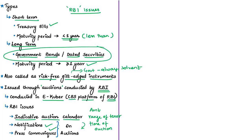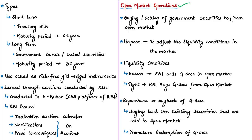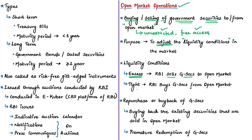Open market operations refer to the buying or selling of government securities in the open market, which is an unrestricted market with free access where anyone can participate. RBI conducts open market operations to adjust liquidity conditions in the market. When RBI feels there is excess liquidity — excess money in the market — it sells government securities, absorbing money from the open market. This is one method by which RBI controls liquidity and thereby controls demand-pull inflation, where more money chases fewer goods.